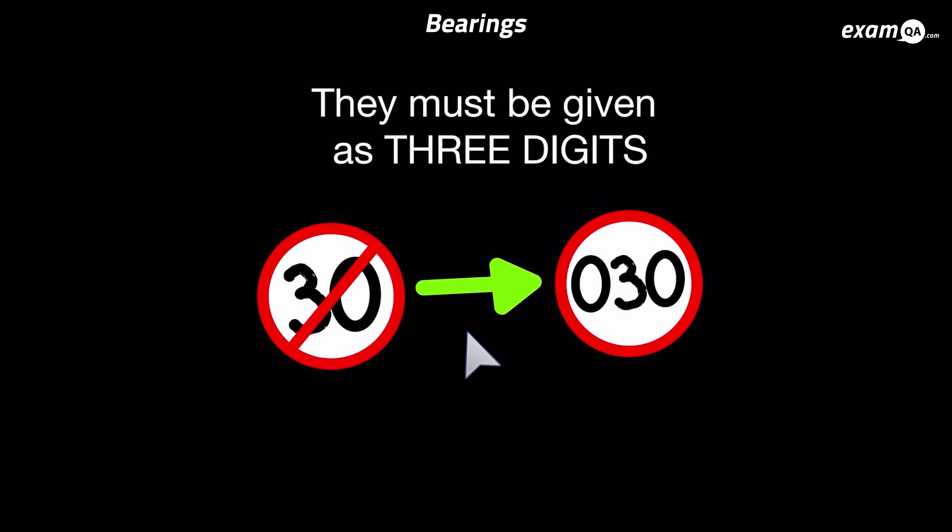As I mentioned bearings are angles and they must always be three digits. So even if you've got a two-digit angle for example here 30 degrees you can't simply write it as 30 degrees. You must write it as 030 as standard. So bearings must always be three digits.